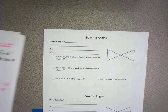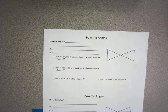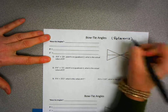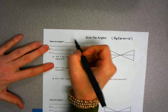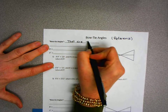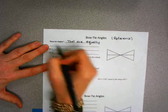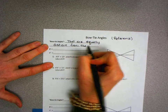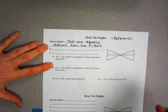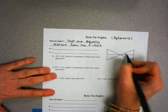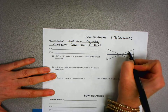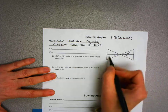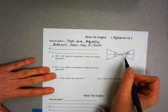This lesson is about bow tie angles, also called reference angles. They are angles that are equally distant from the x-axis. In this diagram, we have what we call theta and theta prime, and then we have these angles — they are all the same degree and they're all called reference angles.